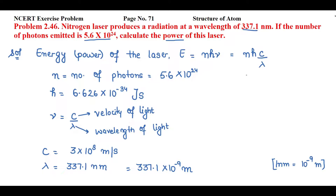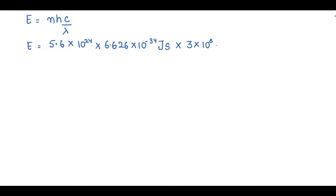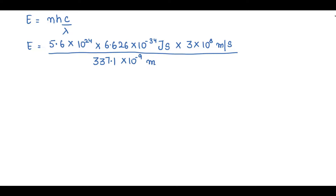Substituting ν = c/λ into E = nhν, our formula becomes E = nhc/λ. Now putting in the values: n = 5.6 into 10 raised to power 24, h = 6.626 into 10 raised to power minus 34 joule second, c = 3 into 10 raised to power 8 meter per second, divided by λ = 337.1 into 10 raised to power minus 9 meter.